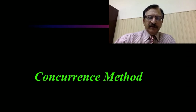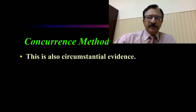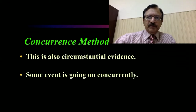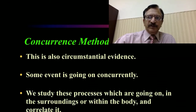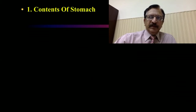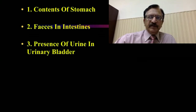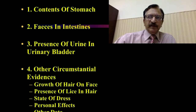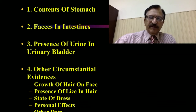The concurrence method of determination of time since death is also a circumstantial evidence. Some events are going on concurrently, and we study these processes which are going on in the surroundings or within the body and correlate them regarding timing. Like the contents of the stomach, the presence of urine in the urinary bladder, and other circumstantial evidences such as the growth of hair on the face, presence of lice in the hair, state of dress, personal effects, and other data.